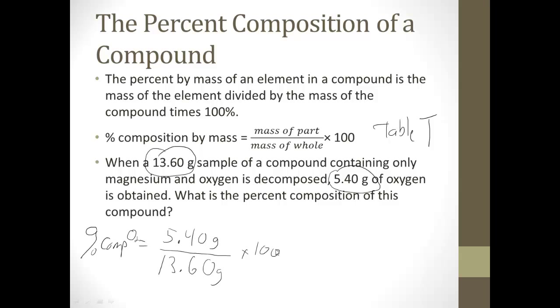And that whole thing will be times 100. So if I plug this into my handy-dandy calculator, I get 5.40 divided by 13.60 equals 0.3970, but it's times 100. So it's 39.7 percent because I'm allowed three significant figures. So in this compound, oxygen is 39.7 percent of it and the magnesium is the rest. So that's going to be 60.3 percent of it is magnesium. It's really a simple thing just kind of plugging and chugging into the formula.